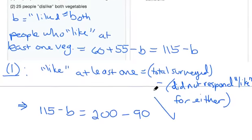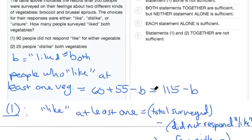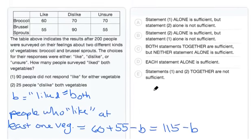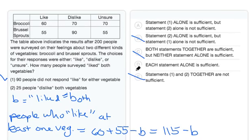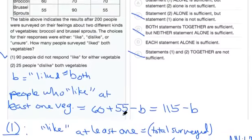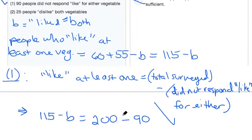Let's mark that statement one is sufficient. We can eliminate answer choices B, C, and E, leaving us with choice A or D. Those depend on what statement two does, so let's scroll back down and consider statement two.